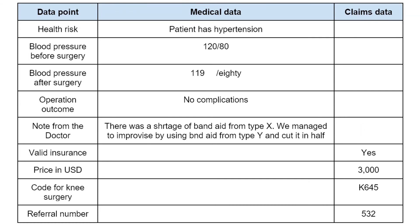This is just one example as to why medical data, though useful for analyzing individual patients, may be harder to use for the analysis of large groups of patients. On the other hand, we can see that the claims data is simpler, but consists of more structured data, such as rigid codes, numbers, and unambiguous yes or no answers. For this reason, even a hospital that possesses medical data will often prefer to use the claims data it has generated to analyze and compare the performance of different doctors, departments, and patient groups.